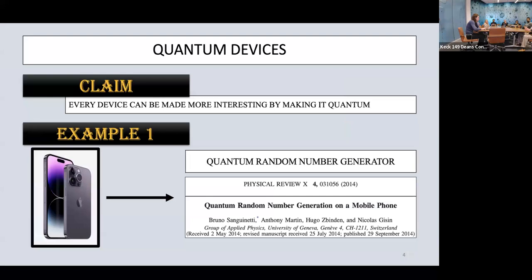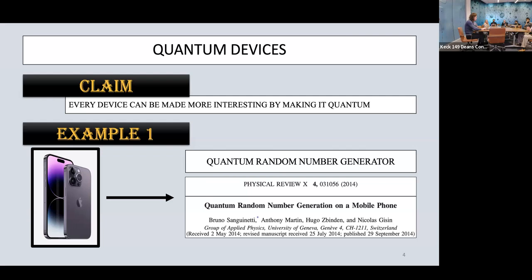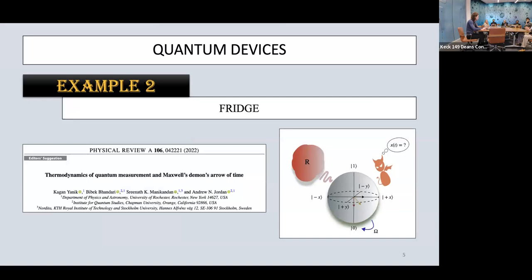I'll make a scientifically unjustified claim: every device can be made more interesting by making it quantum. One such device I encountered in my undergrad in Poland was a quantum random number generator based on pixels in a mobile camera — slightly crazy. Another example from our group is making a fridge quantum by using fluid qubits instead of standard fluid, and our group turns out to be pretty good at analyzing such devices.